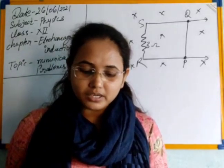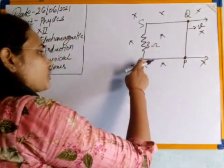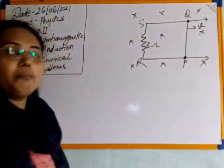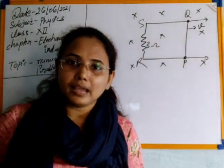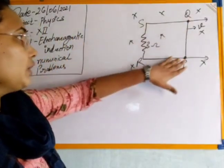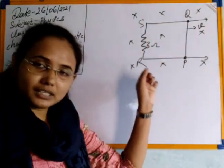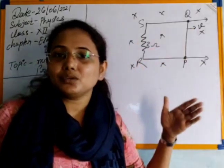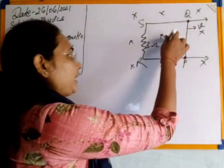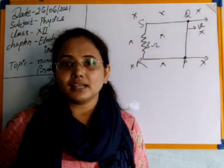Calculate the force needed to move the rod in the indicated direction with a constant speed of 2 m/s. In this question, the total loop PQRS has a 3-ohm resistor connected. It is kept in a perpendicular uniform magnetic field. The area vector of the loop is perpendicular to the plane of the paper and is in the direction of the magnetic field, so the angle between the magnetic field and area vector is again zero. Hence theta = 0.